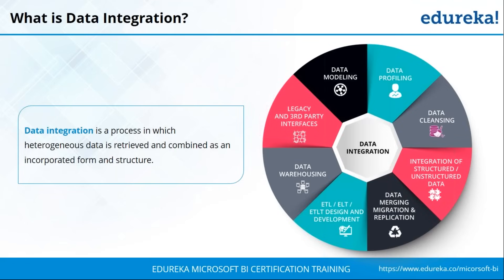Data integration was coined recently, but before that people also used data integration without realizing its potential, so they used different methods. A few ways to achieve data integration include data modeling, where you first create a model and then perform operations on it, and data profiling, where you take sample data and check for inconsistencies, errors, or variations. There is no single limitation as to how you achieve data integration — it can be a collection of different processes.